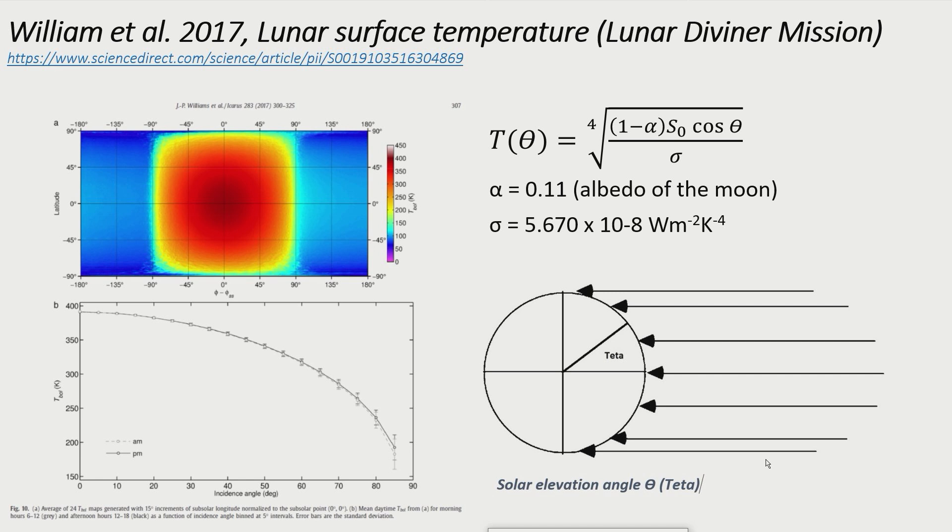When analyzing the temperature data from the Lunar Diviner mission, it turns out that on the sunny side of the Moon, the surface temperatures are very well described by the Stefan-Boltzmann law when the angle of incidence of the solar irradiation, theta, is taken into account. According to William et al., the surface temperature distribution function, T of theta, is as follows.